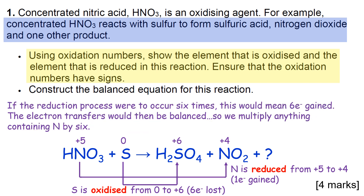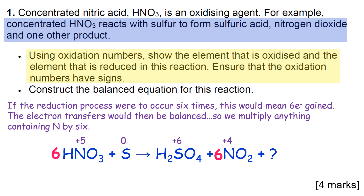If we take the reduction process and do this six times, it would gain six electrons from the oxidation part of the equation. So let's take everything that has nitrogen in it and multiply that by six - I've moved my NO2 along a little bit so I can put a six in front of it.